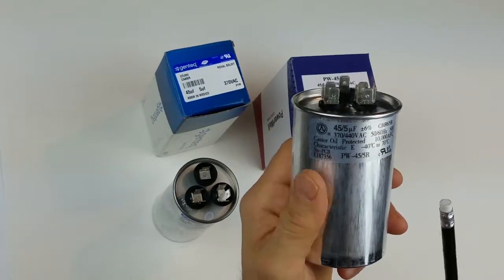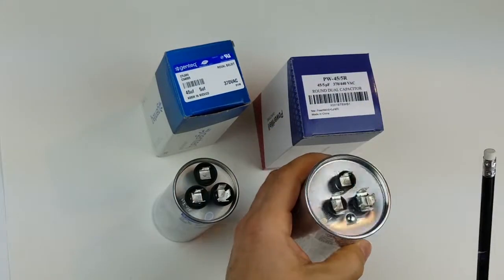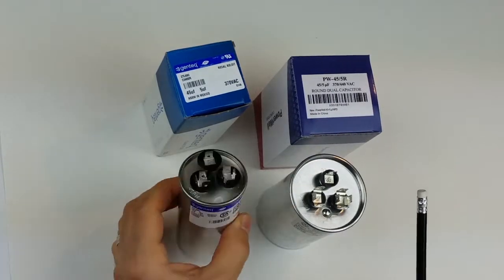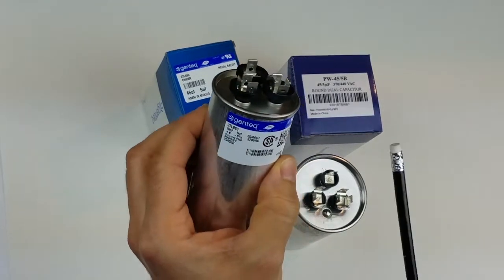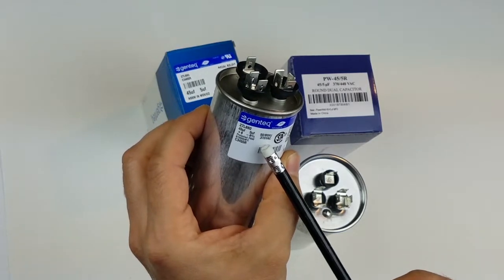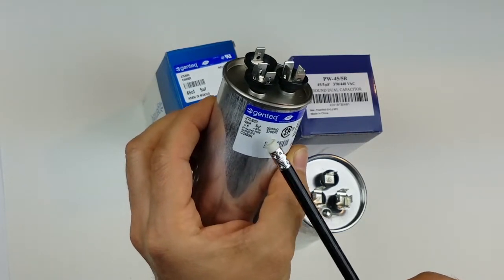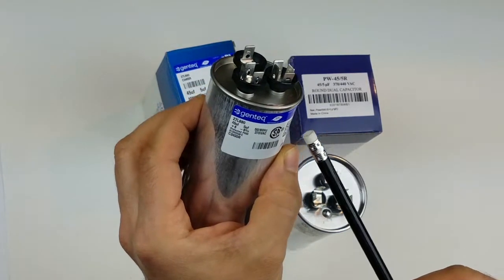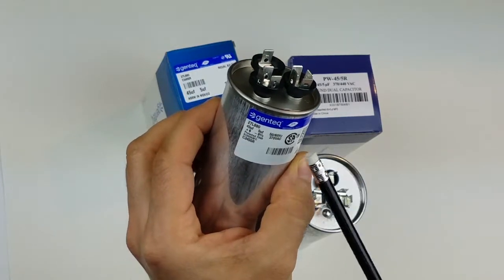So why does Gentech make a capacitor that's 370 only? The reason is to save cost. They make it cheaper so it can be used only in 370 applications. They do make a 440 version that's a little bit more expensive.